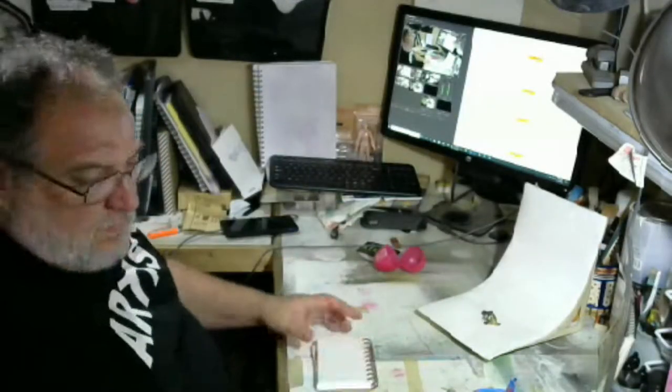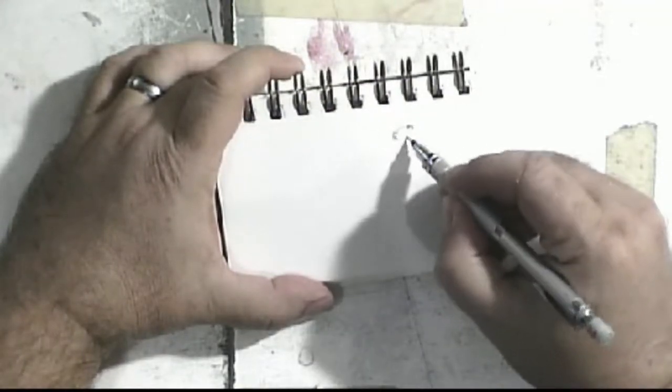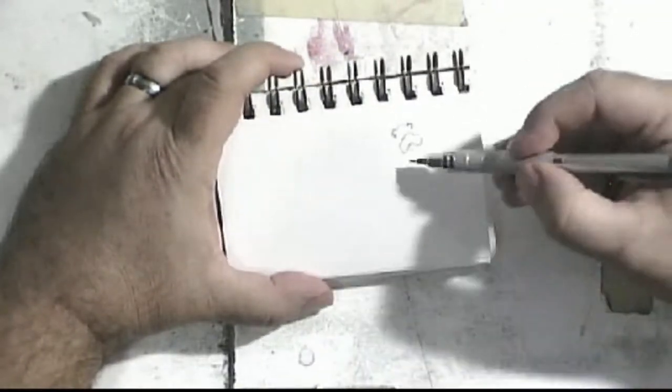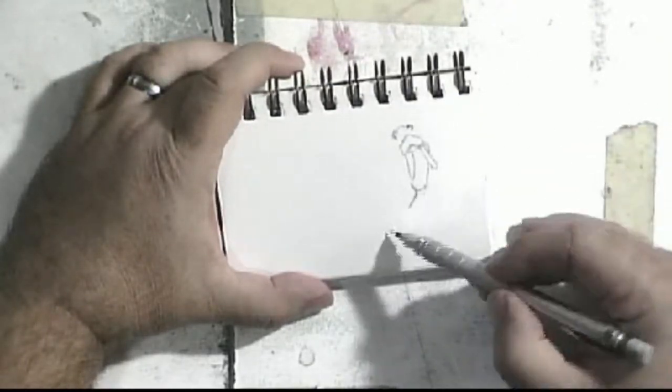The walrus, Odobenus rosmaris, is a large flippered marine mammal with a discontinuous distribution about the North Pole in the Arctic Ocean and sub-arctic seas of the Northern Hemisphere.